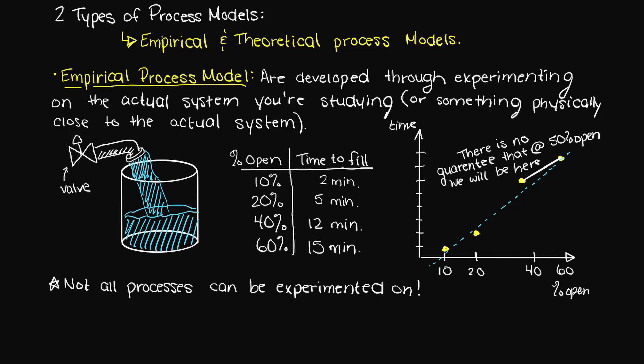By that, I mean that even though we tested our tap at 40 and 60% opened, there is no guarantee that at 50% we will be right in the middle of those two values, and if we fail to account for this in our final control system, this could be a very costly mistake.